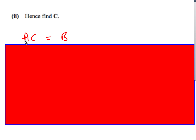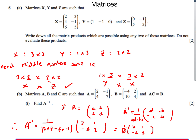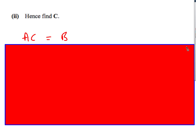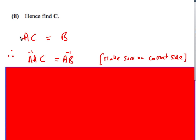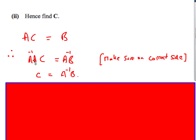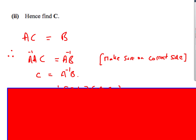Then it says: hence find C. We know AC = B. Multiplying the inverse of A on the left of both sides, the inverse and A cancel out, leaving C on the left. So C equals A⁻¹ times B. Since we've already found the inverse matrix, we just multiply that by B.